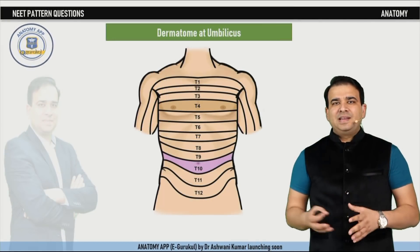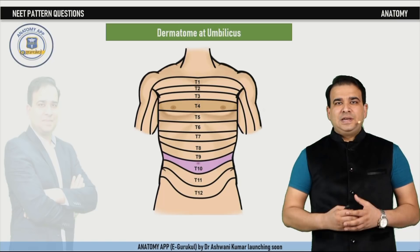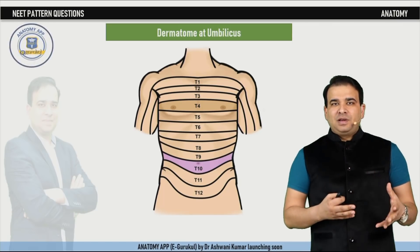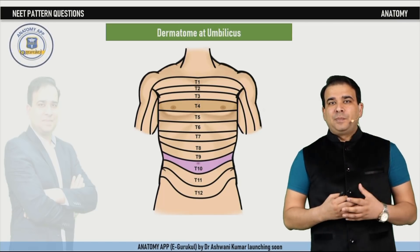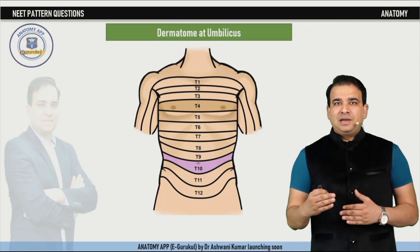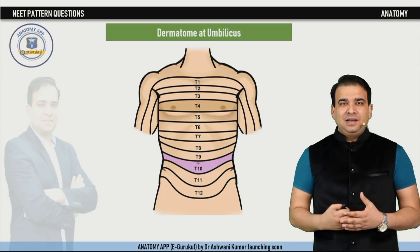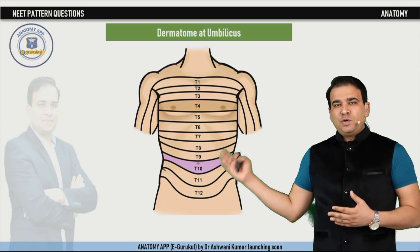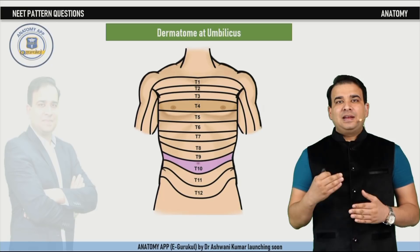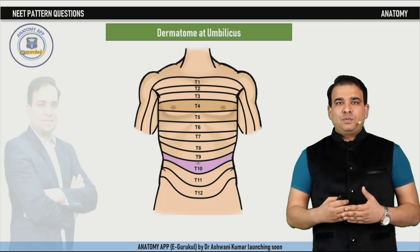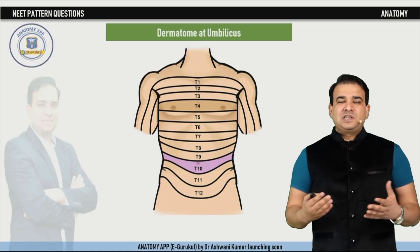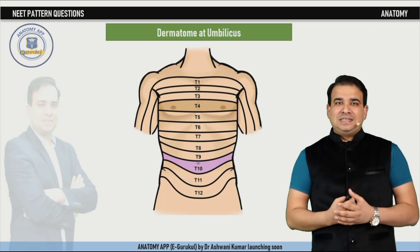This is about the dermatome of the umbilicus. The question can be confusing if the vertebral level of the umbilicus is asked rather than the dermatome. The dermatome of the umbilicus is T10, but the vertebral level of the umbilicus is between L3 and L4 vertebrae. So remember: the vertebral level is L3–L4, but the dermatome of the umbilicus is T10.